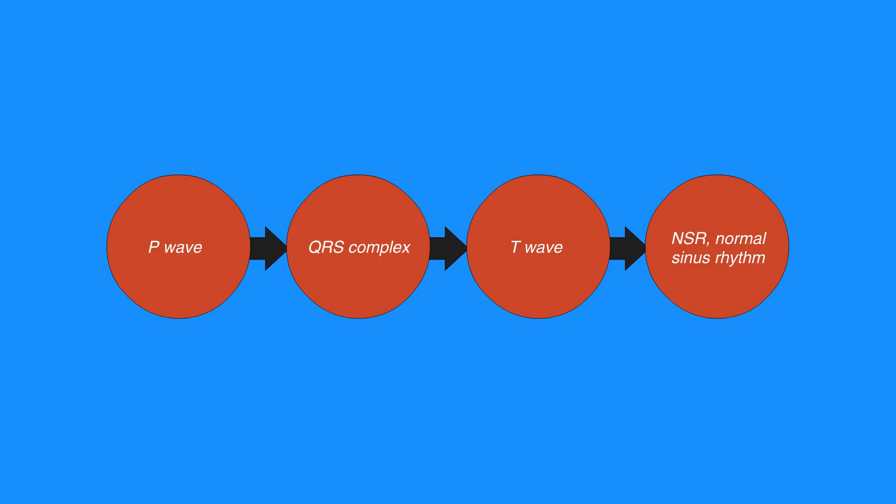Abnormalities in the conduction system can cause delays in the transmission of the electrical impulse and are detected on the ECG. These deviations from normal conduction can result in dysrhythmias, such as heart blocks, pauses, tachycardias, bradycardias, blocks, and dropped beats.